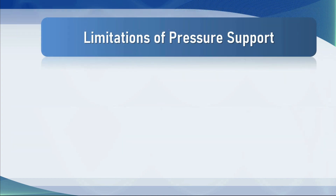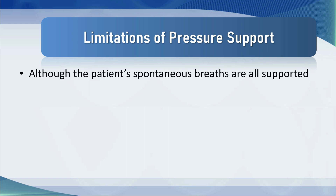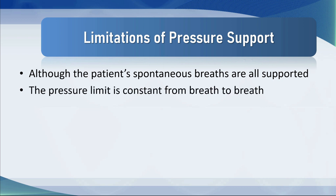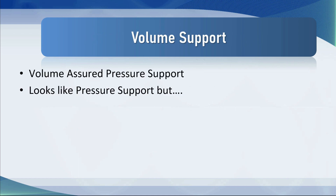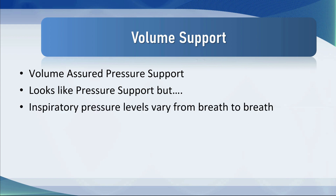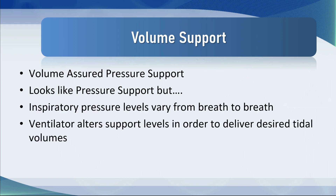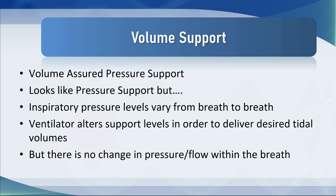Pressure support is a marvelous mode of ventilation but it has several limitations. Although the patient's spontaneous breaths are all supported, the pressure limit is constant from breath to breath, although tidal volumes can be quite variable. If a patient deteriorates the tidal volumes will drop with deterioration of lung compliance. Conversely, if the patient's lungs improve, the tidal volumes may be absolutely enormous. The idea of volume support is volume assured pressure support — it looks like pressure support, but the inspiratory pressure levels vary from breath to breath, and the ventilator alters support levels to deliver the desired tidal volumes. Compared with automatic tube compensation, there is no change in the pressure-flow relationships within the breath; things change from breath to breath but not within the breath.